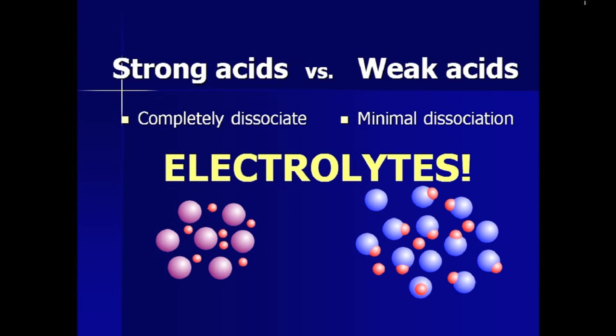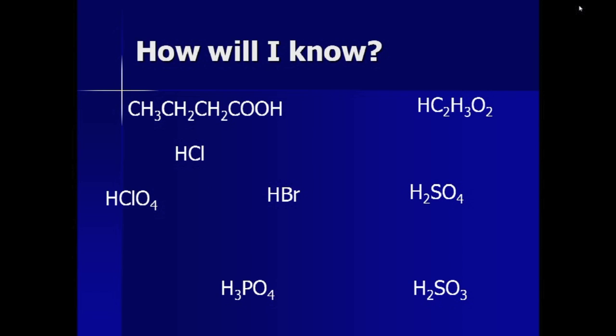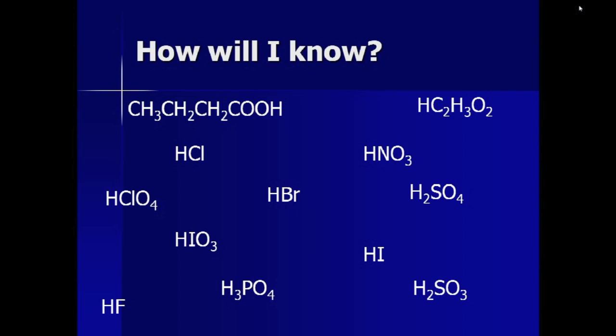Of course, you aren't going to have a light bulb set up every time you encounter an acid. And there are many acids you will encounter when studying chemistry. So, how do you know which of these are strong and which are weak? Well, you have to memorize them. More memorizing? Yes, but fortunately for you, there are only six.